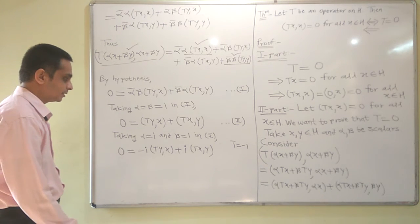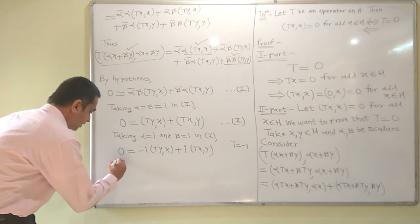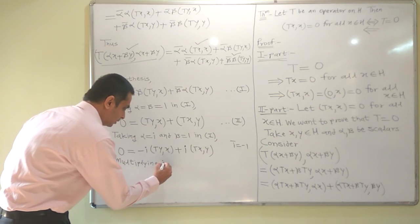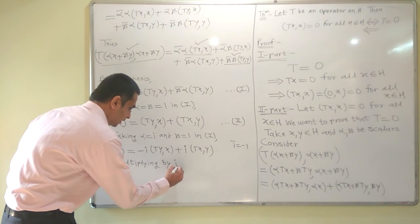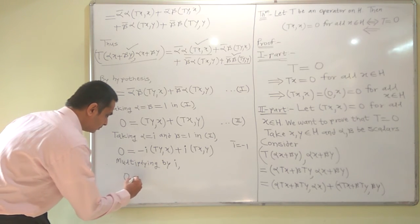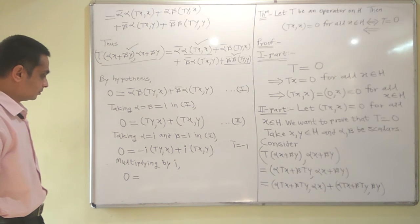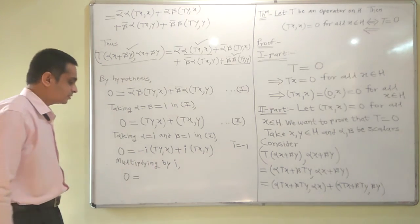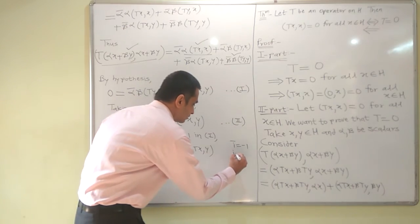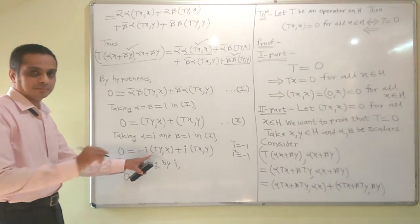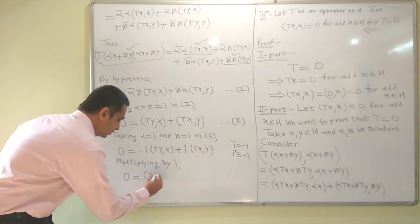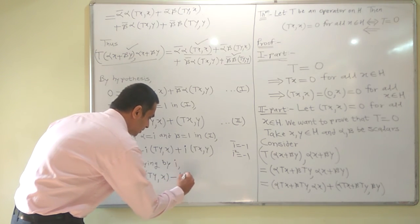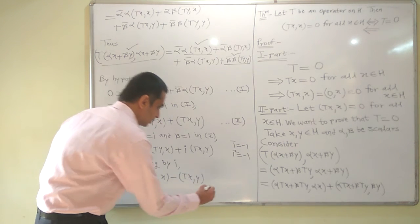Multiplying this by i, and using i² = −1, we obtain the third equation: ⟨Ty, x⟩ − ⟨Tx, y⟩ = 0, which gives −⟨Tx, y⟩ as the resulting term.